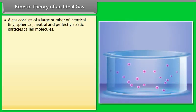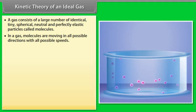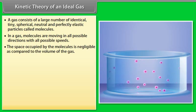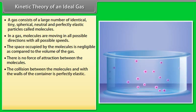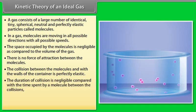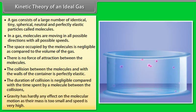A gas consists of a large number of identical, tiny, spherical, neutral and perfectly elastic particles called molecules. In a gas, molecules are moving in all possible directions with all possible speeds. The space occupied by the molecules is negligible as compared to the volume of the gas. There is no force of attraction between the molecules. The collision between the molecules and with the walls of the container is perfectly elastic. The duration of collision is negligible compared with the time spent by a molecule between the collisions. Gravity has hardly any effect on the molecular motion as their mass is too small and speed is very high.